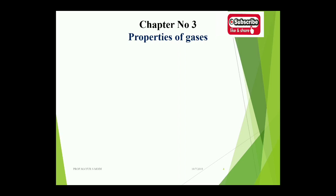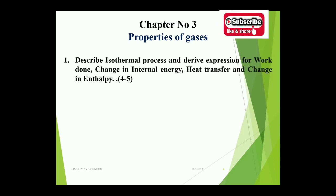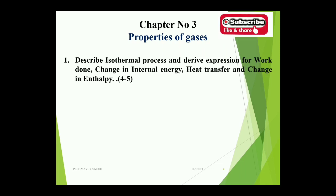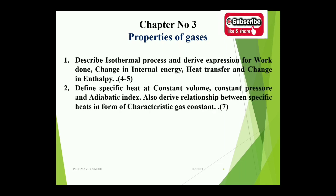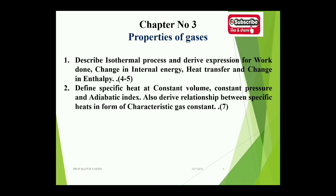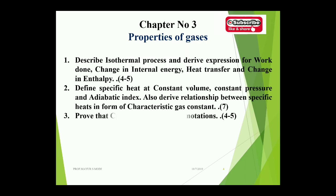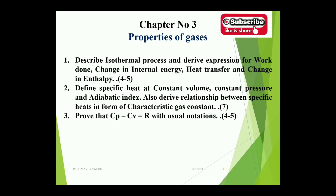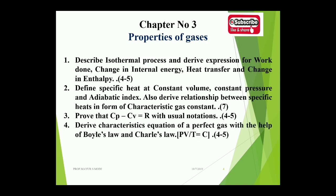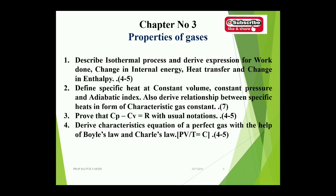Chapter three covers properties of gases. Describe the isothermal process and derive expressions for work done, change in internal energy, heat transfer, and change in enthalpy, 4 to 5 marks. Define specific heat at constant volume, constant pressure, and adiabatic index; also derive the relationship between specific heats in terms of the characteristic gas constant, 7 marks. Prove that Cp minus Cv equals R with usual notations, 4 to 5 marks. Derive the characteristic equation of a perfect gas using Boyle's law and Charles's law — prove that PV/T equals constant, 4 to 5 marks.